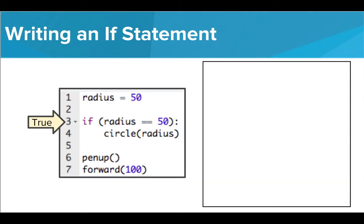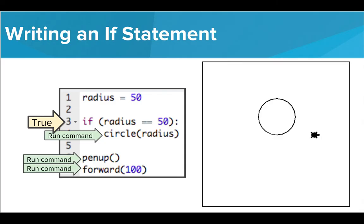Let's look at this sample code. We have a variable named radius with a value of 50. My if statement is using the condition radius is equal to 50, which is true, so Tracy will follow the commands indented below and draw a circle. Once this command is complete, Tracy then moves on to the next commands where she lifts the pen up and then moves forward 100 pixels.